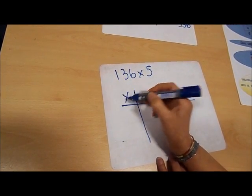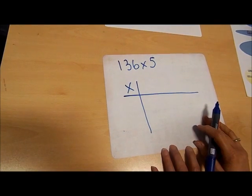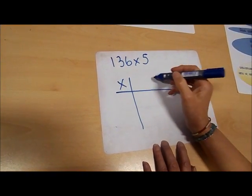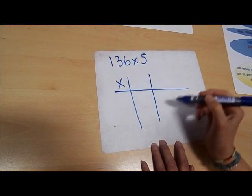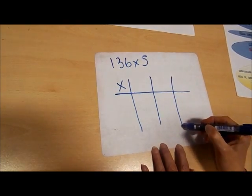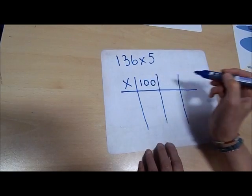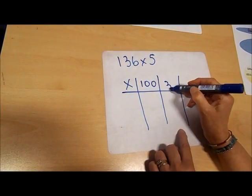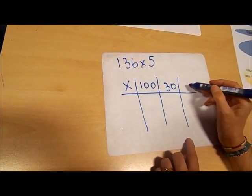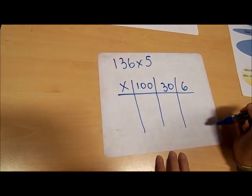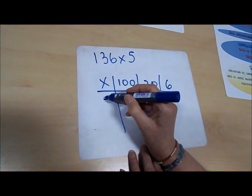I'm going to put my multiplication sign here. Now this time I'll have to partition my number into hundreds, tens, and units. So this number is 136, and I'm going to multiply by 5.